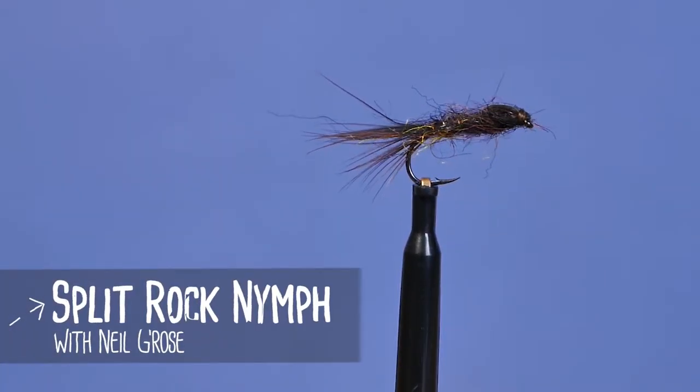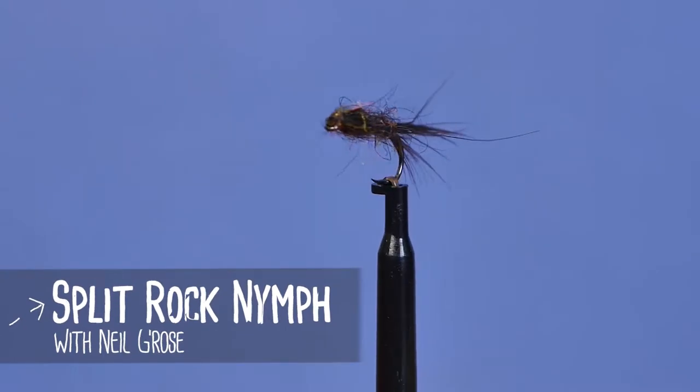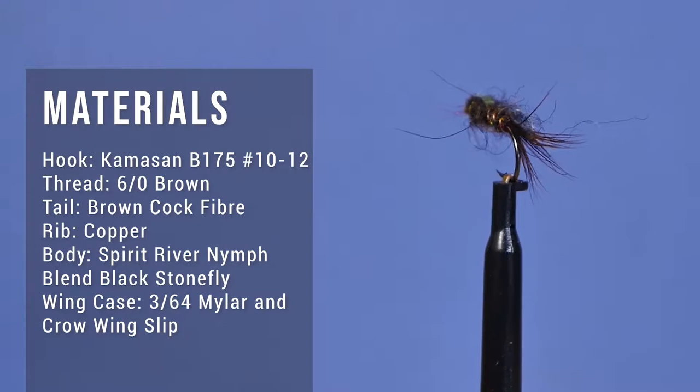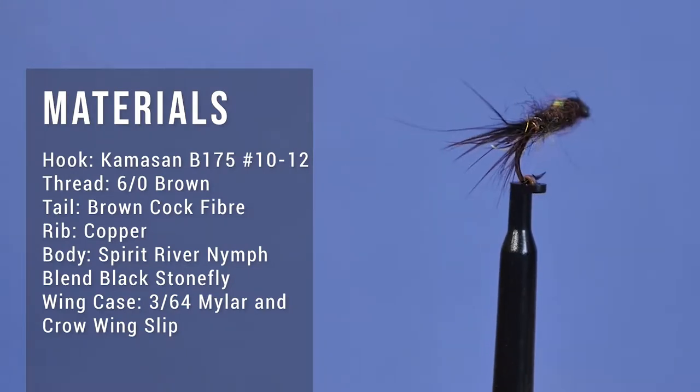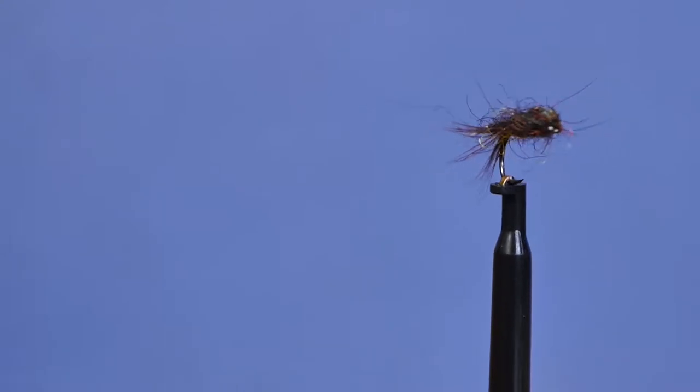Alright, this one's called the Split Rock Nymph. It's called Split because it's got a split in it. I was driving past out on the western lakes where you can see Split Rock and came up with this idea for a nymph which I used a lot on Little Pine.